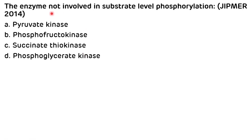Another question: 'Enzyme not involved in substrate-level phosphorylation?' Options: A. Pyruvate kinase. B. Phosphofructokinase. C. Succinate thiokinase. D. Phosphoglycerate kinase. Pyruvate kinase is involved in substrate-level phosphorylation in glycolysis. Succinate thiokinase is involved in substrate-level phosphorylation in the TCA cycle. Phosphoglycerate kinase is also involved in substrate-level phosphorylation in glycolysis. Phosphofructokinase is not involved — rather, in that step there is utilization of ATP. The correct answer is B.